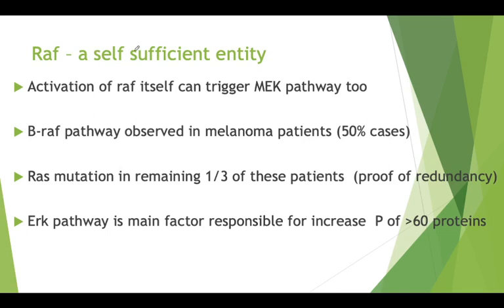RAS-RAF is a self-sufficient entity — activation of RAF itself can trigger the MEK pathway. Regarding the BRAF pathway observed in melanoma patients: the activation of BRAF, irrespective of RAS involvement, has been reported in around 50% of melanoma cases. The RAS mutation is present in the remaining one-third of these patients, showing redundancy and that this pathway is more actively involved in skin cancers.